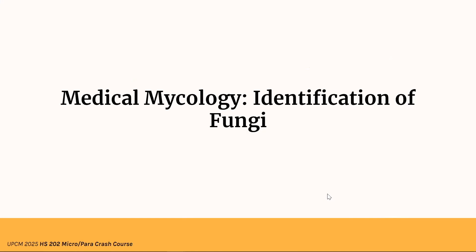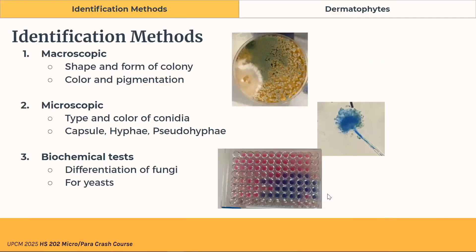Now let's try to identify some fungi. Identification methods include macroscopic — checking the shape, form, color, pigmentation, and number of colonies — and microscopic, looking at them under the microscope. This specimen was stained with lactophenol cotton blue to visualize the conidia, capsule, and hyphae. Biochemical tests are also used to differentiate fungi, especially for yeasts.